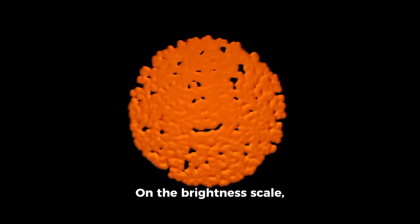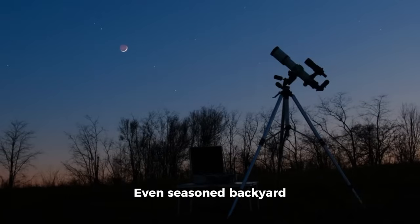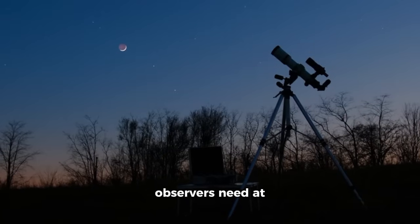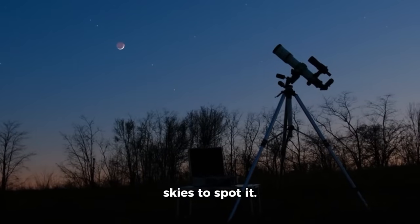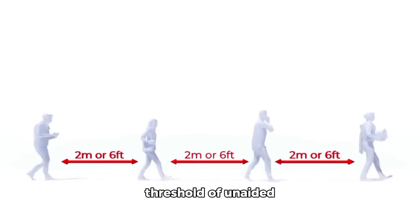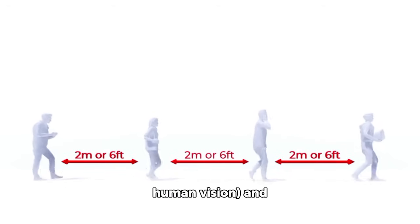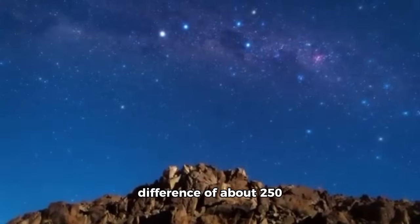On the brightness scale, 3-I Atlas has now reached magnitude 12. That may not mean much at first glance, but practically speaking, it makes the comet invisible to the naked eye. Even seasoned backyard observers need at least a medium-sized telescope and dark skies to spot it. The distinction between magnitude 6, the threshold of native human vision, and magnitude 12 is a difference of about 250 times in brightness.